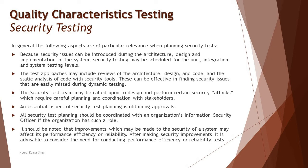The various aspects a test plan should address for security testing include: security issues can be introduced during the architecture, design, or implementation of the system. Security testing may therefore be scheduled from the unit or integration testing level all the way to system testing. It is not necessary that security testing only kicks off when the system is stable. Initial reviews can start from the unit testing level, because fixing security issues late in the cycle is a very hard rework.